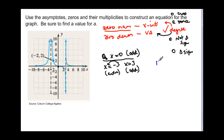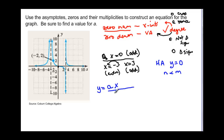The horizontal asymptote is y = 0 — you can see the graph tending toward the x-axis — which means the degree of the numerator must be less than the degree of the denominator. So we write y = a · x on the numerator (x = 0, degree 1), and on the denominator (x + 3)² for the even asymptote at x = −3, and (x − 3) for the odd asymptote at x = 3. That gives degree 3 in the denominator versus degree 1 in the numerator, which satisfies our condition.